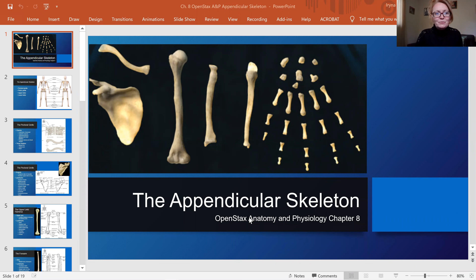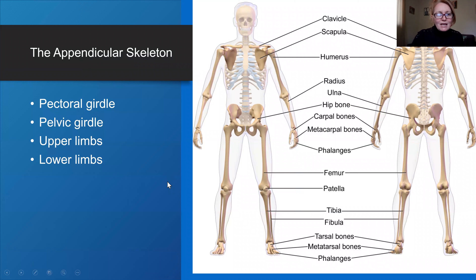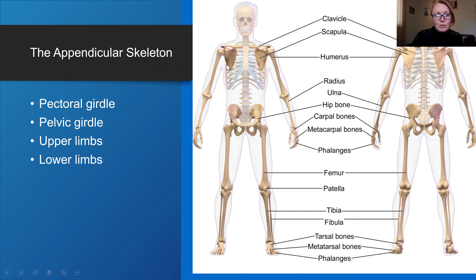Hello, everybody. Welcome to Ms. Maguire's video lectures, and today we're covering the appendicular skeleton. The appendicular skeleton includes bones of your upper limbs and lower limbs, so your arms and your legs, and also structures that attach your arms and legs to your axial skeleton — the pectoral girdle and pelvic girdle.